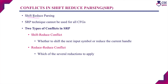Shift-reduce parsing is a bottom-up parsing technique. In this technique, the parser will implement shift and reduce operations frequently. Initially, it starts with the shift operation, shifting one or more input symbols from the input buffer into the top of the stack until a proper handle appears on top of the stack. Whenever a proper handle appears, the parser implements the reduce operation to reduce the handle. The shift and reduce operations are implemented continuously until the stack derives the start symbol of the grammar and the input buffer contains only the dollar symbol.